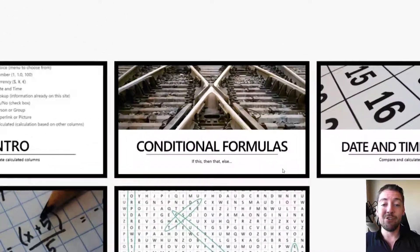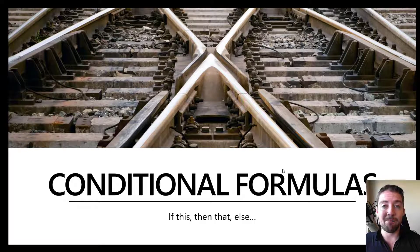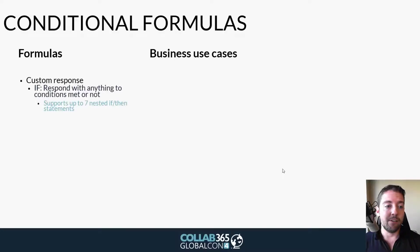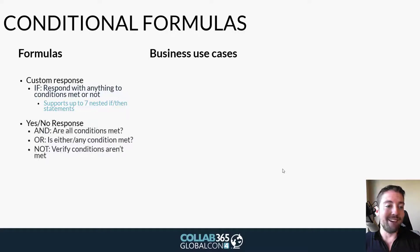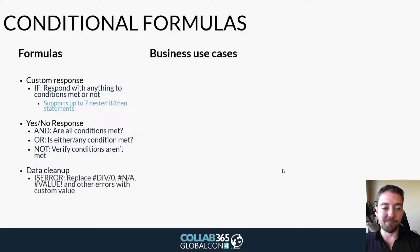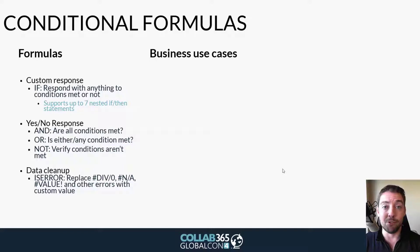Let's jump into conditional formulas first — talking about 'if this happens, then this is the result I want.' You could have 10 different results that show up in your conditional formulas. One example: you need a customer response — they respond with anything, conditions met or not — and you can nest up to seven different statements. You can also get a yes/no response for simple reporting, and do data cleanup: instead of showing a divide-by-zero error, replace it with a message like 'incorrect numbers' or a custom phrase.